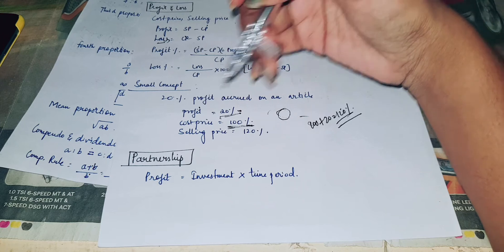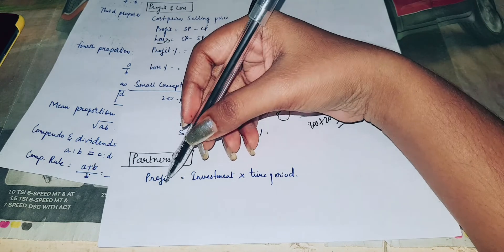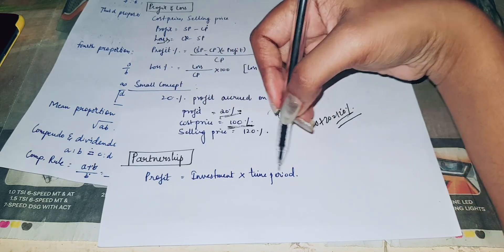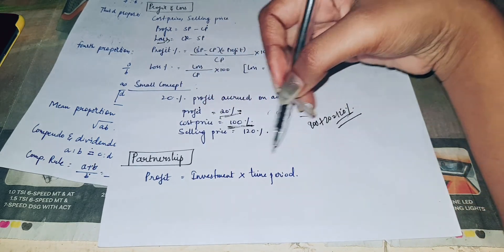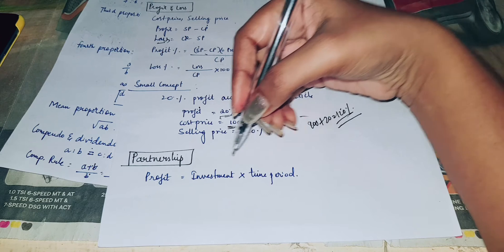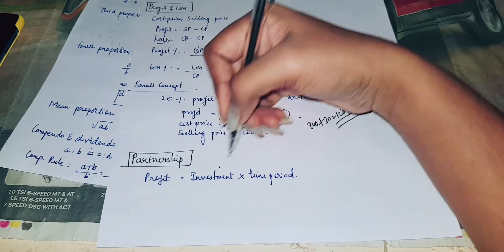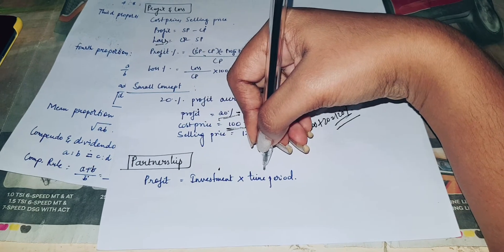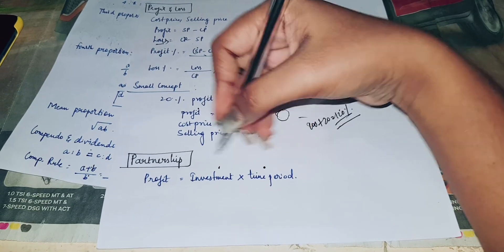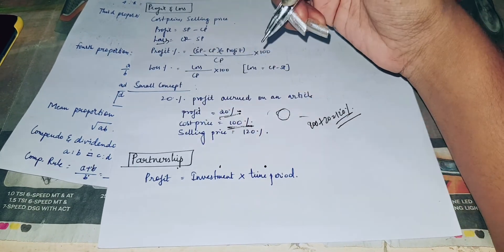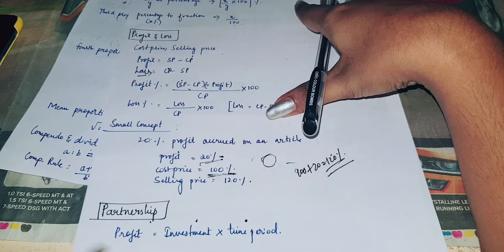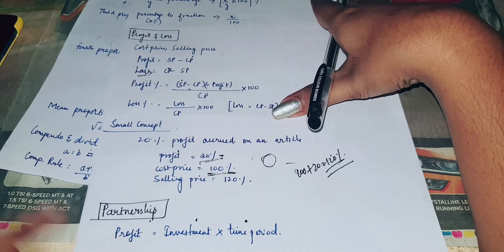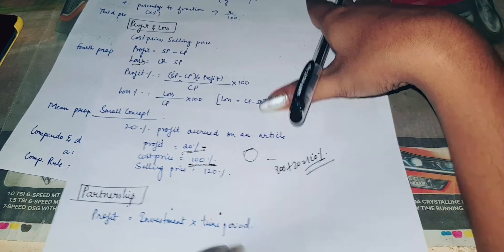In partnership, a very important formula: profit is distributed proportional to investment multiplied by time period. The person who invests for a longer time period gets a proportionally larger share.